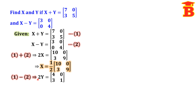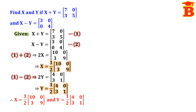Left side is 2y. Dividing both sides by 2, y equals one half times the matrix [4, 0; 3, 1]. So this is the y value. Finally, x equals half times [10, 0; 3, 9] and y equals half times [4, 0; 3, 1].